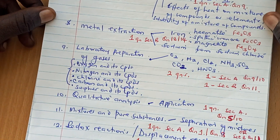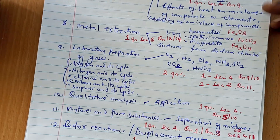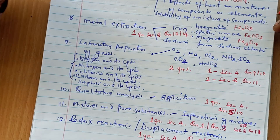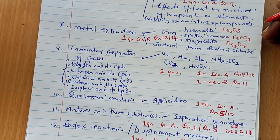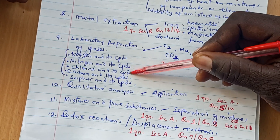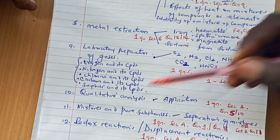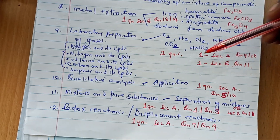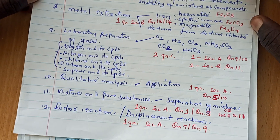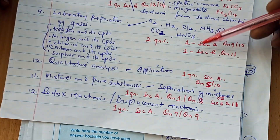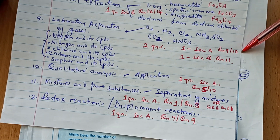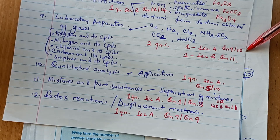The next topic is laboratory preparation. Under this topic, we always have two questions. Please revise laboratory preparation of gases in detail — topics like oxygen, nitrogen, chlorine, carbon compounds, and sulfur compounds. One question will always come in section B as automatic question number 11. A second question may come in section A as question number 9 or question 10. Please revise this topic thoroughly.